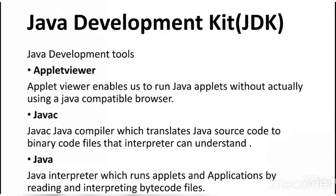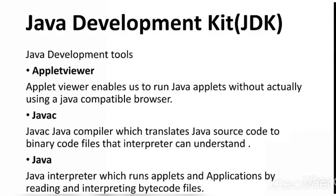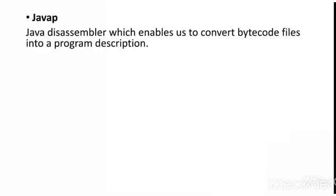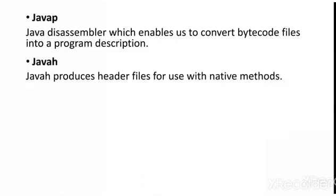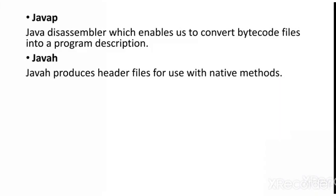In Java, programs written by the programmer are not directly converted into binary code. Instead, the source code is converted into intermediate bytecode, which is machine independent. Hence the bytecode can be executed on any machine with the help of a Java interpreter. JavaP is a Java disassembler which enables us to convert bytecode files into a program description. JavaH produces header files required for C language; if you want to implement a Java program in other programming languages, you can use JavaH to produce the required C header files.